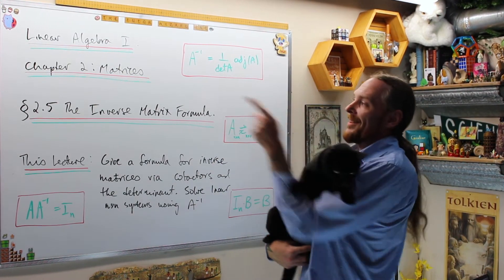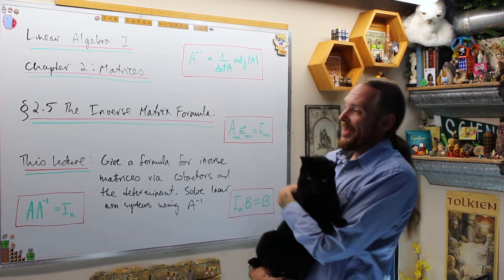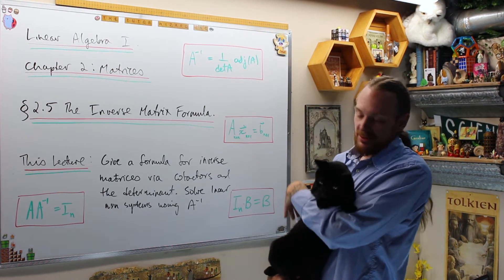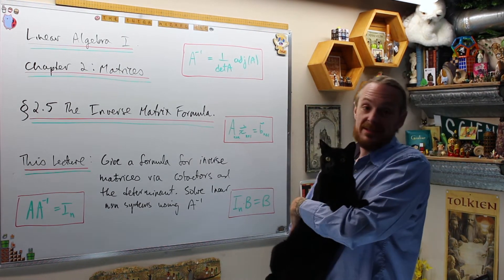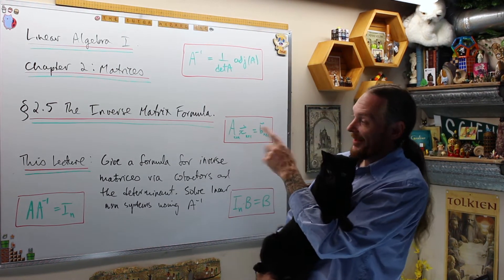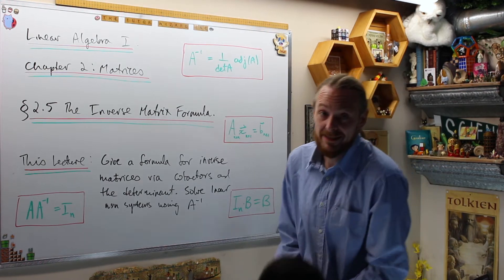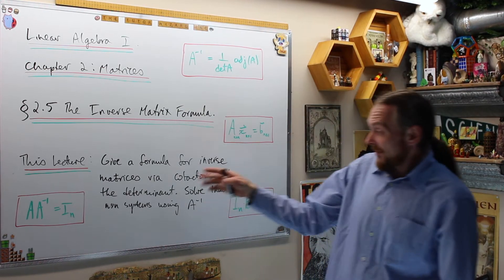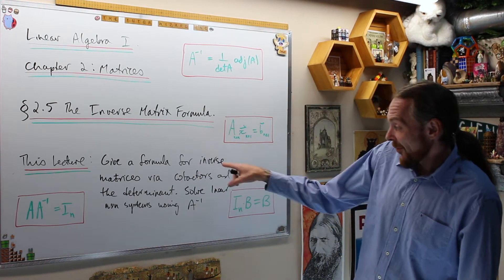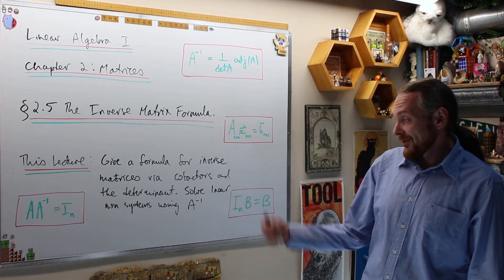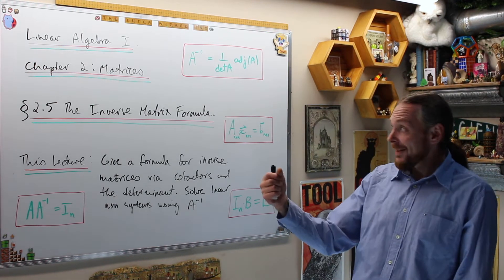What we're going to do today is linear algebra 1. Chapter 2 is matrices. Section 2.5 is inverse matrices and the matrix formula. Specifically, what we're going to do this lecture is the formula for inverse matrices via cofactors and determinants.